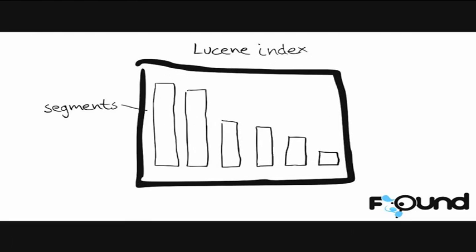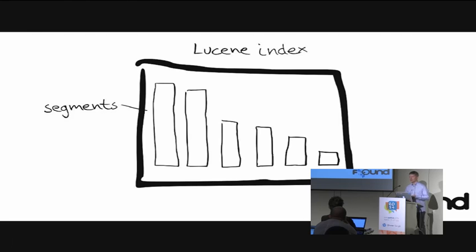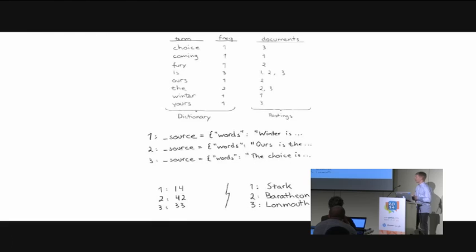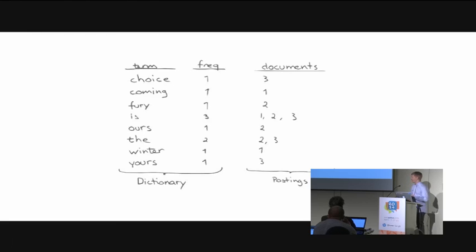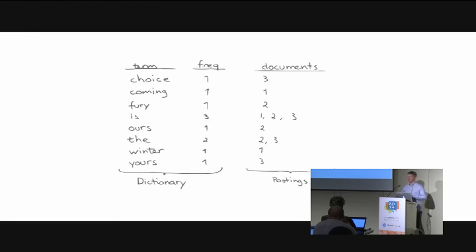Within a Lucene index you have segments, which are sort of like mini indexes. Within the segments there are data structures like an inverted index, stored fields, document values, and so on. The inverted index is the key data structure to understand when you work with search. It consists of two parts: the sorted dictionary, which contains the index terms, and for every term you have a posting list — the documents containing that term.